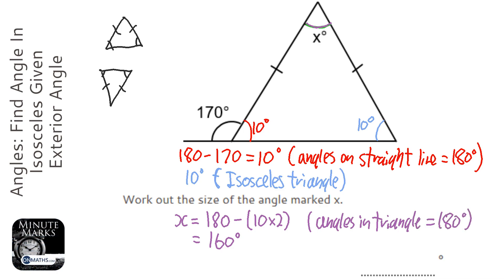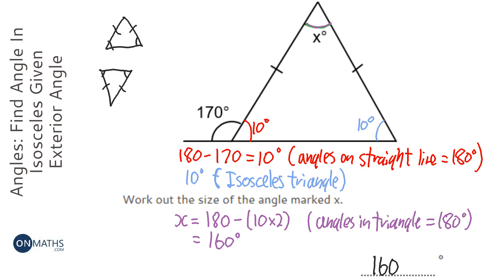It's really important that you write down all the reasons for every step. To check your answer: 160 at the top, and the triangle has 10, 10, 160 — that adds up to 180. And 170 and 10 make 180, so the straight line at the bottom left adds up too.